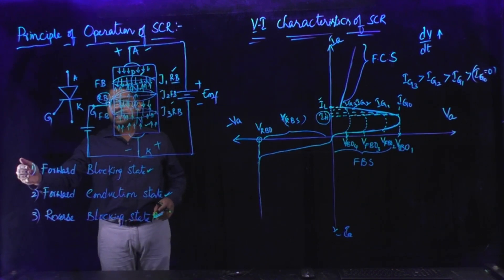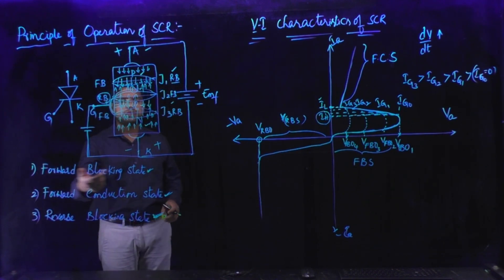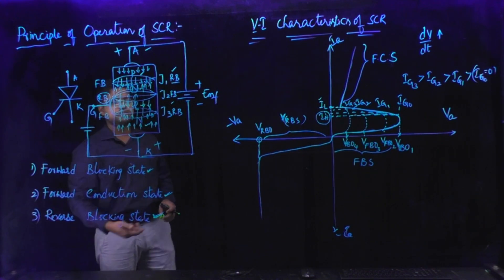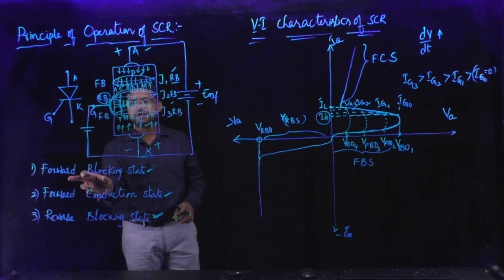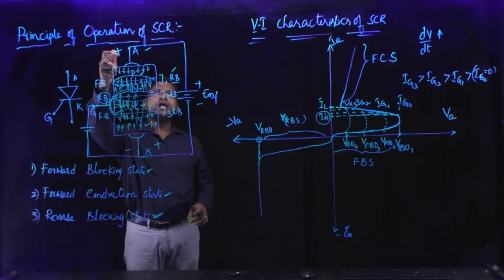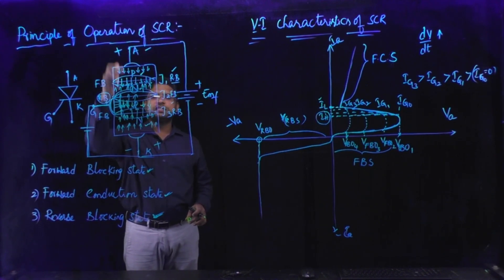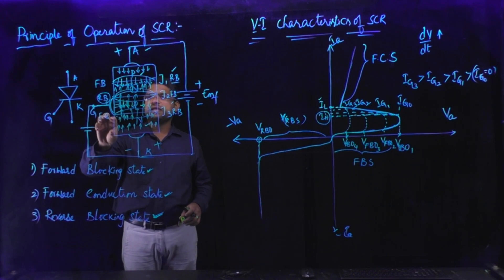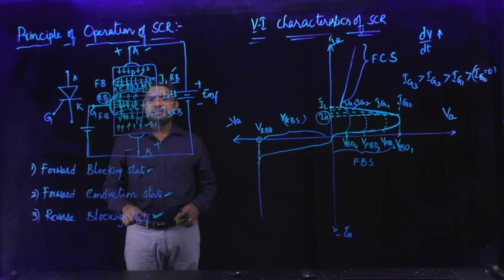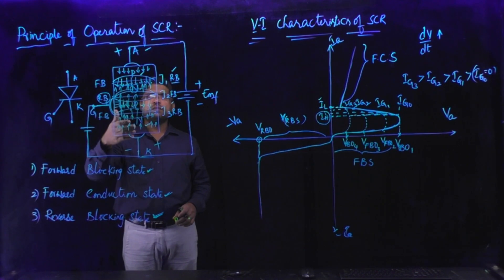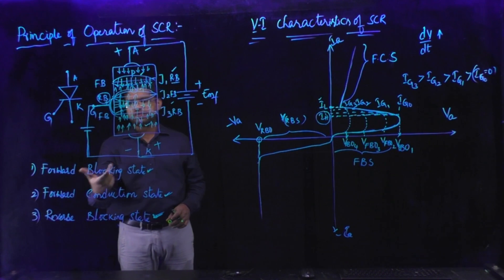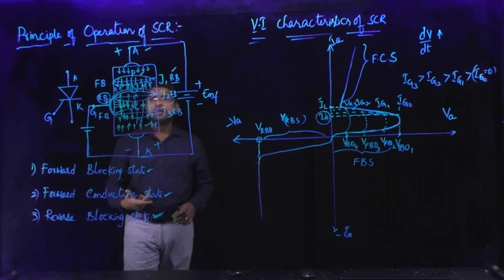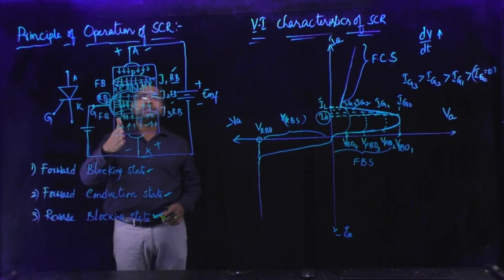The principle of operation of SCR is explained in three states: forward blocking state, forward conduction state, and reverse blocking state. During forward bias condition of SCR, when anode is made positive with respect to cathode, the device is under forward bias. Then junctions J1 and J3 are forward biased and J2 is reverse biased. During this forward bias condition there is no current flowing through the SCR, so that state is called the forward blocking state.